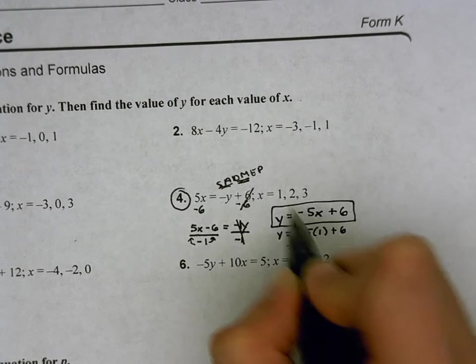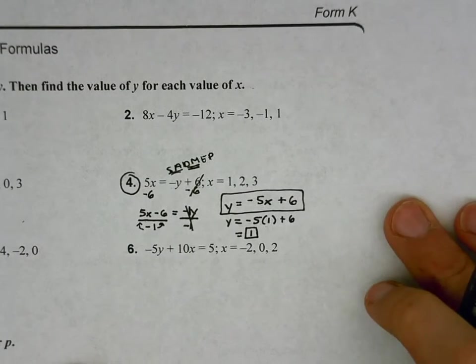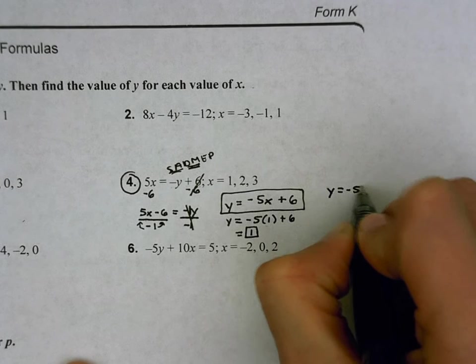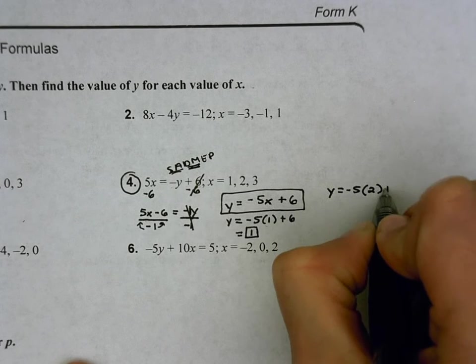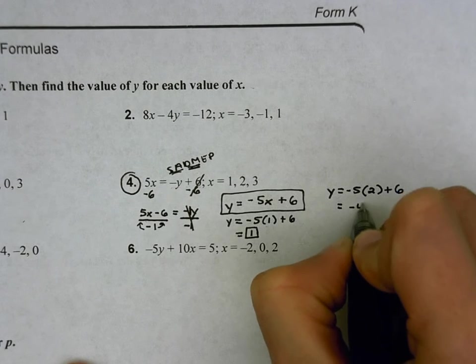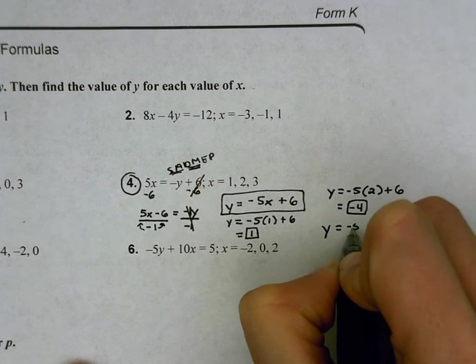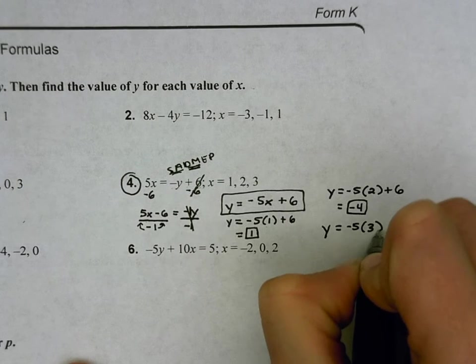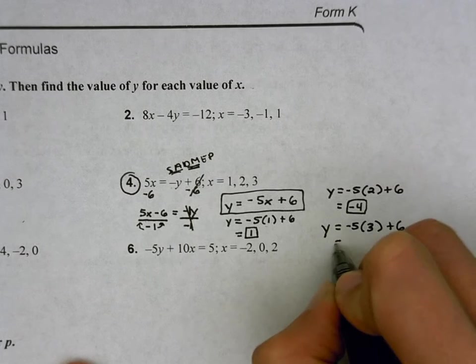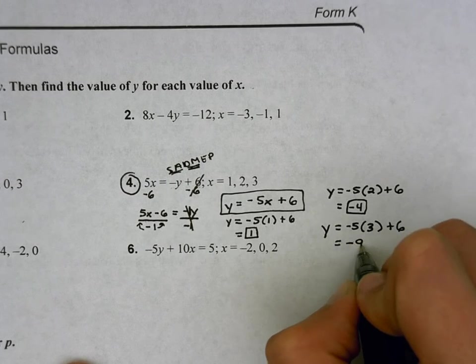And I'm going to repeat this step for x equals 2 and x equals 3. So we're going to have y equals negative 5, now times 2, plus 6. Negative 5 times 2 is negative 10, plus 6 is negative 4. And then y equals negative 5, now times 3, because that's my third value of x over here, plus 6. Negative 5 times 3 is negative 15, plus 6 is negative 9.